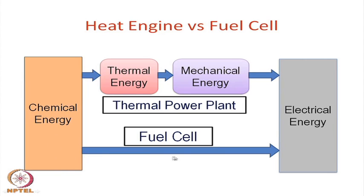In a fuel cell, chemical energy is directly converted to electrical energy in one step, making it theoretically very efficient. The electrical efficiency can be as high as 80 to 90 percent, though the overall plant efficiency comes down to about 40 to 50 percent due to various other losses. This is still very high compared to thermal power plants, both aiming to convert chemical energy to electrical energy.